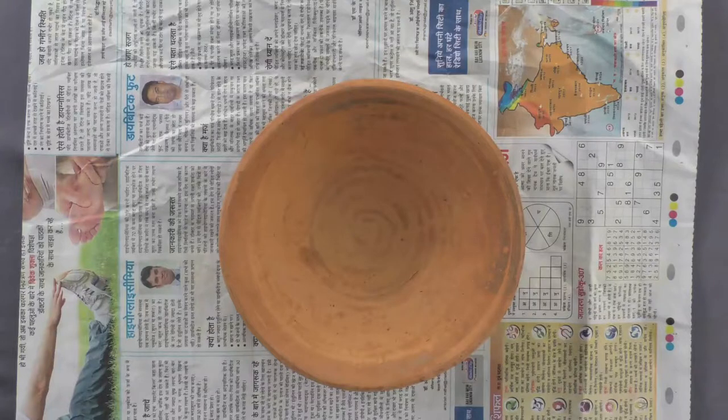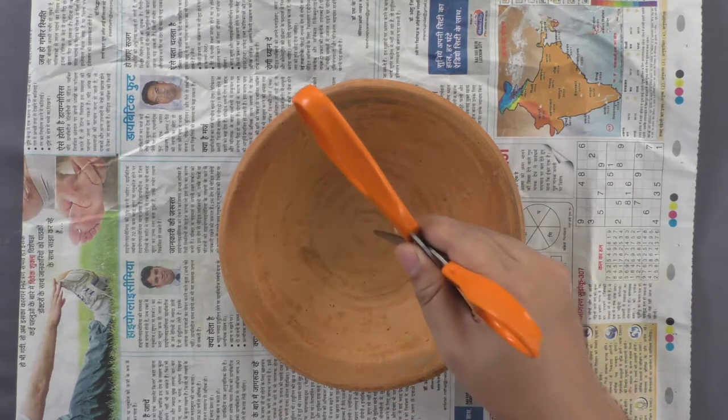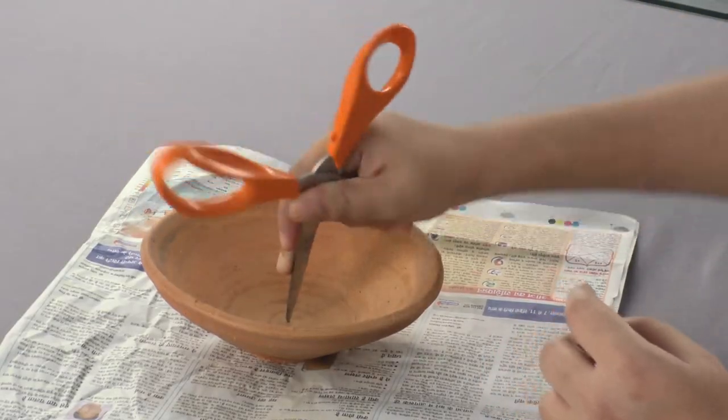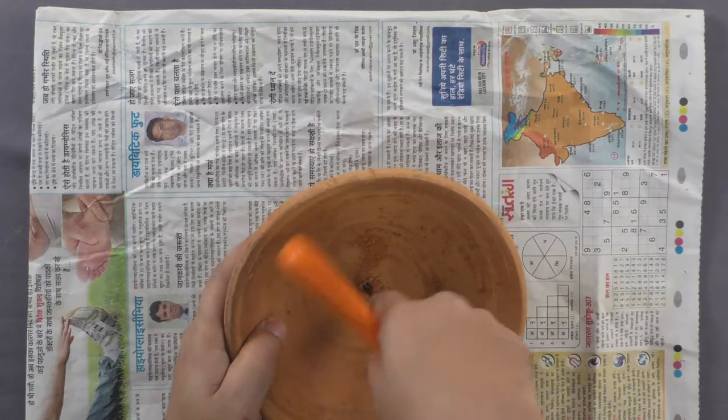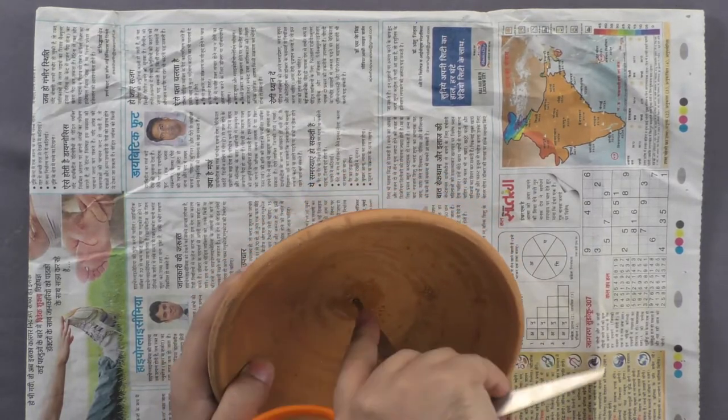Let us take an earthen bowl that is approximately about 9 inches wide and pierce a hole in its center by using and rotating a scissor.